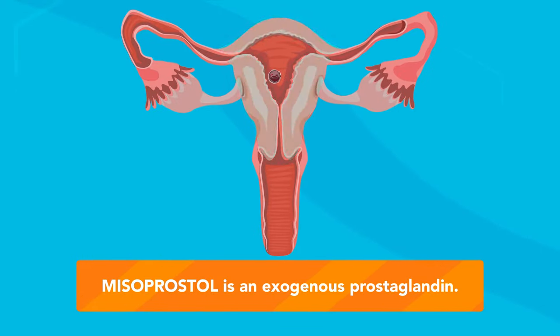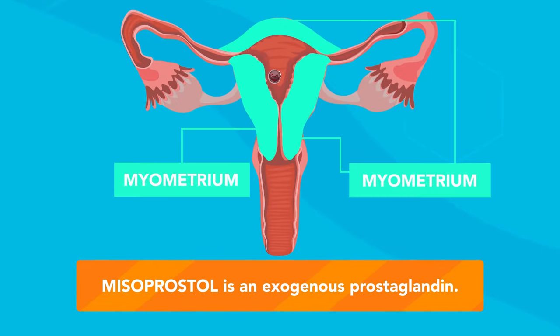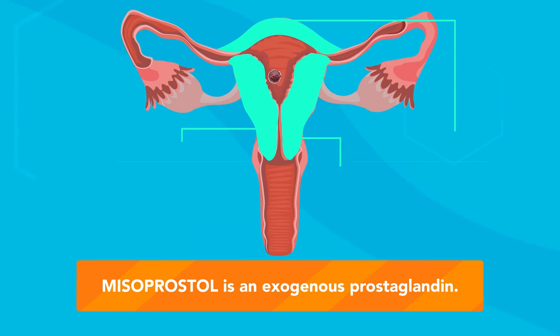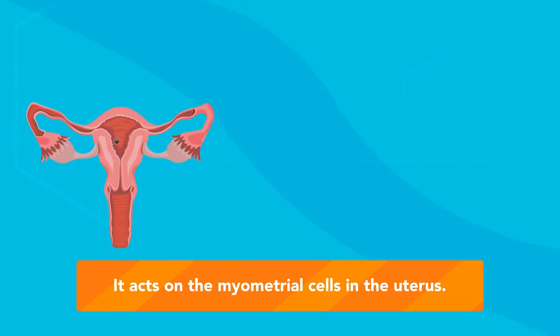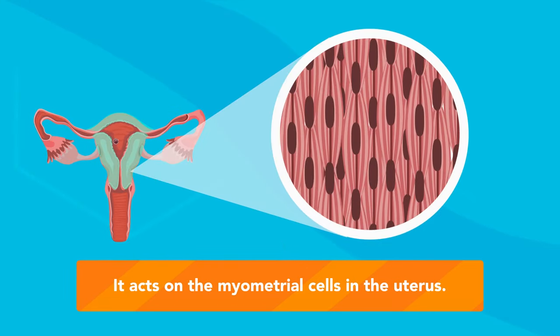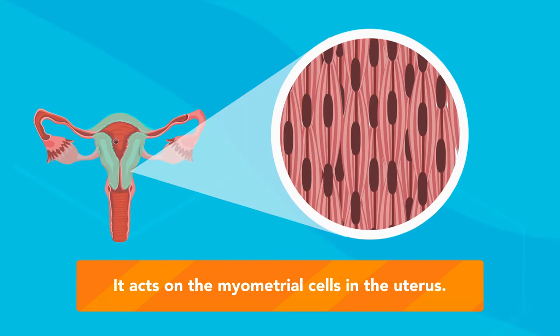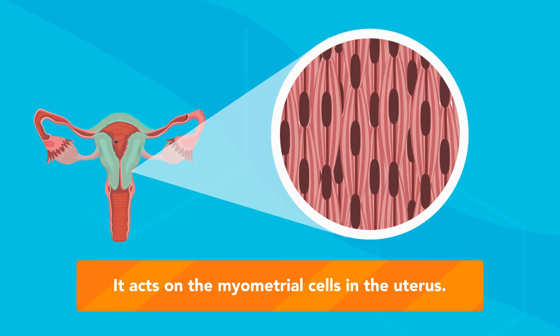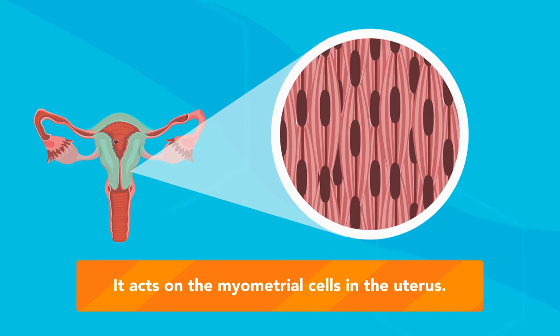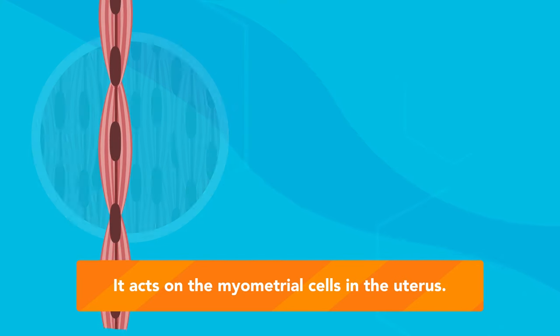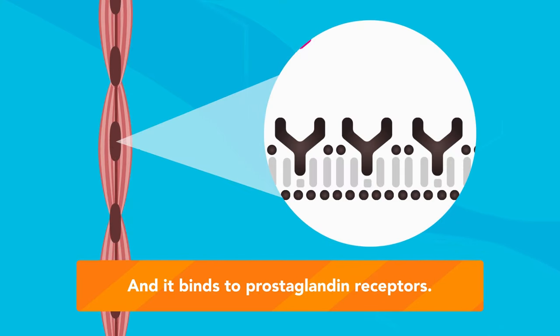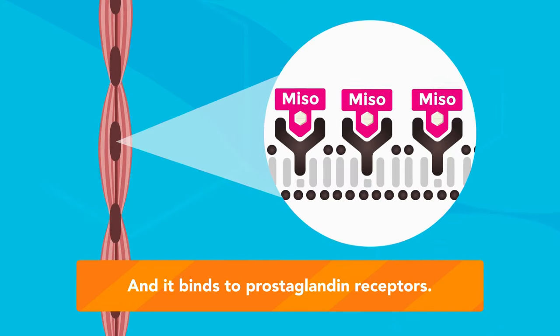Misoprostol is an exogenous prostaglandin. It acts on the myometrial cells in the uterus and binds to prostaglandin receptors.